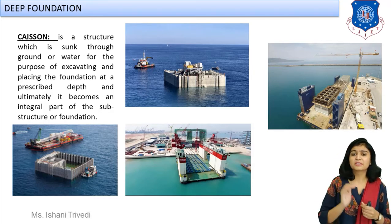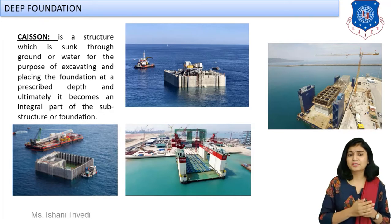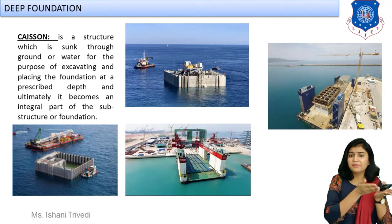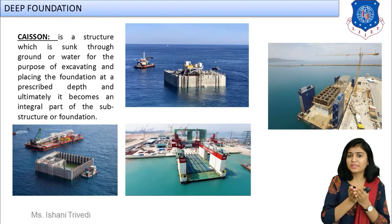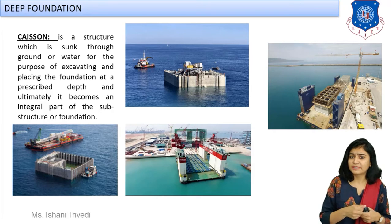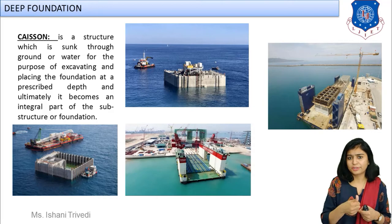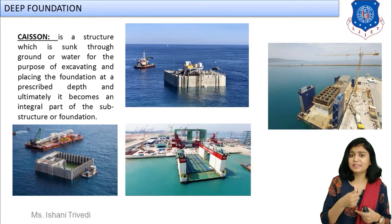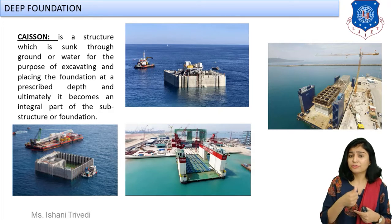Now look at the images — you can see how the box-like structure is made, how it is pulled with the help of ships and barges into the water, floated, and sunk into its position. The caisson is a box-like structure which is sunk into water, and on top of that your construction is done such that it becomes an integral, permanent part of your superstructure.